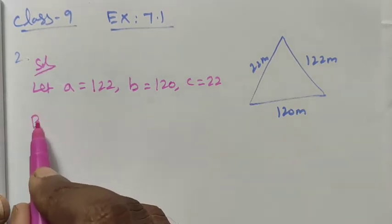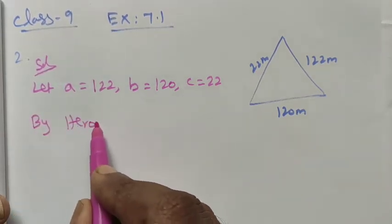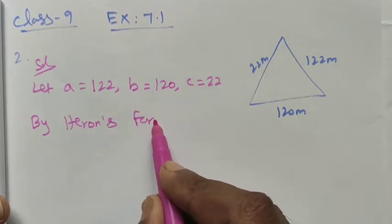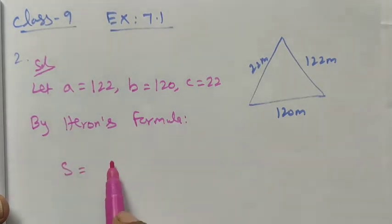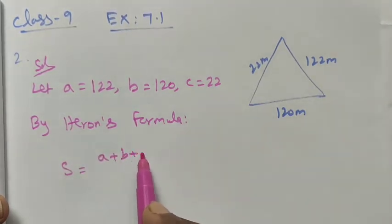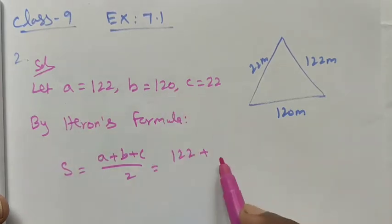We are using Heron's formula. By Heron's formula, we want to find out the semi-perimeter of the triangle. S is semi-perimeter, that is A plus B plus C divided by 2. Here A is 122, B is 120, C is 22, divided by 2.